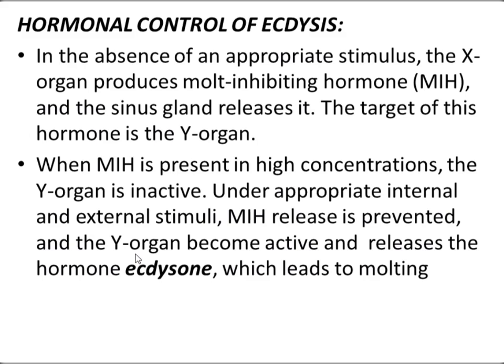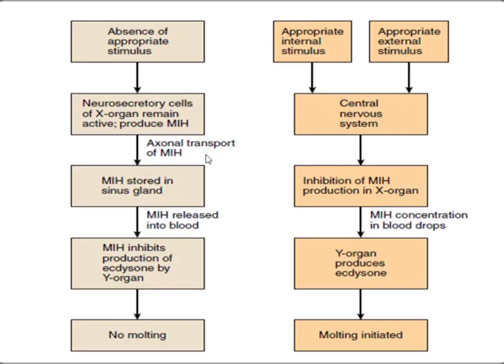Under an appropriate stimulus — whether internal or external — the release of MIH is inhibited or prevented. When MIH levels fall, the Y organ becomes active and releases a hormone called ecdysone. This hormone is responsible for initiating and completing the molting process, or ecdysis, in crustaceans.